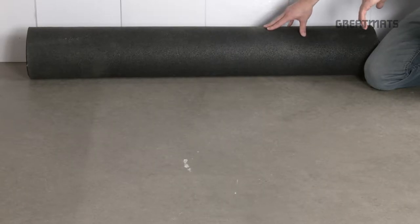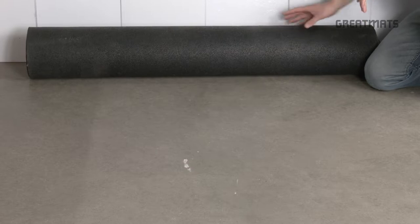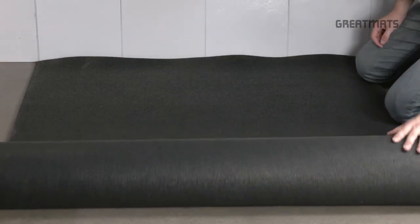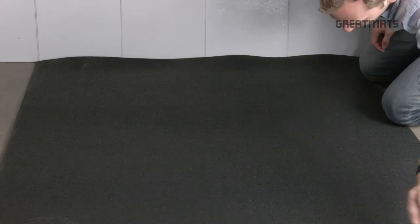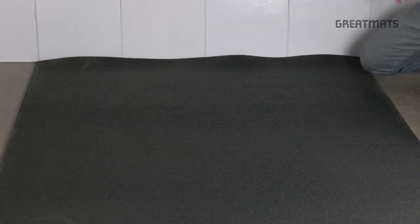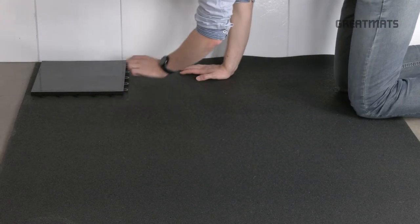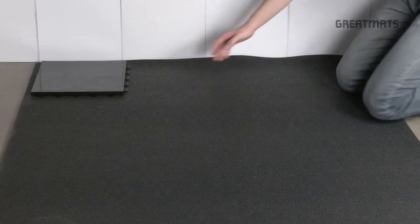If you're looking to reduce noise and fatigue, you do have the option of installing over plyometric rubber. I'll just roll that out here. The installation process is the same, you're just going to be installing over rubber instead of concrete. So I'll start in the corner over here, make sure the loops are facing the same direction.